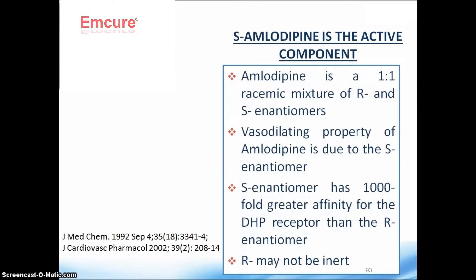Amlodipine is a one-to-one racemic mixture of R and S enantiomers — two components: the R or rectus form, and the S or sinister enantiomer. The vasodilating property of amlodipine is due to the S enantiomer, which has a 1000-fold greater affinity for the dihydropyridine receptor than the R enantiomer.